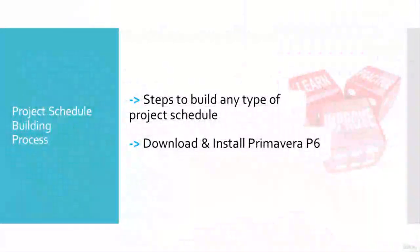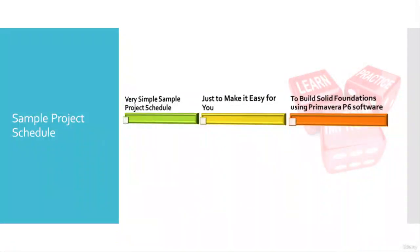In the second section, we will talk about the project schedule building process in general — what steps are required to perform while building any type of project schedule. If Primavera is not installed on your laptop, we will discuss the procedure to download and install the latest Primavera P6 software from the Oracle website. We will begin with a very simple sample project schedule that we will discuss throughout the course step by step, keeping it straightforward to help you build and solidify your project scheduling concepts.